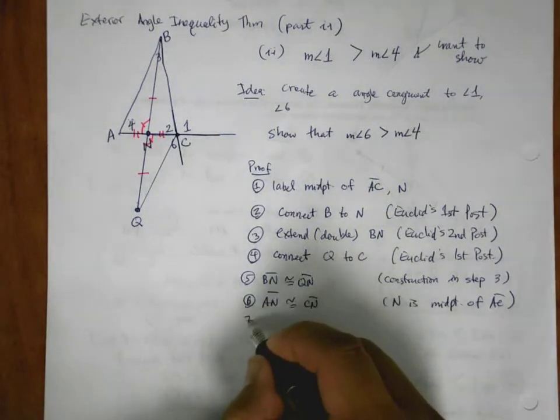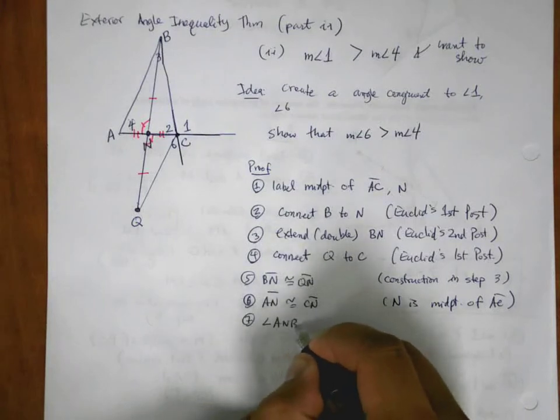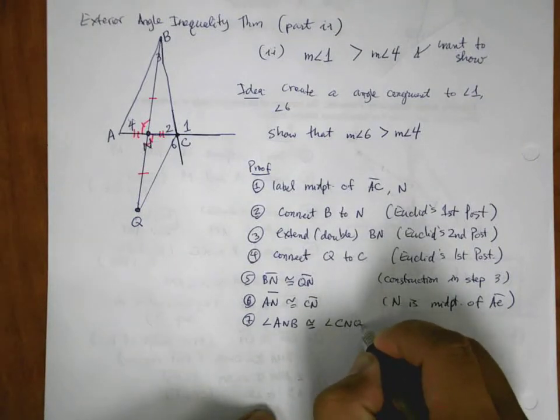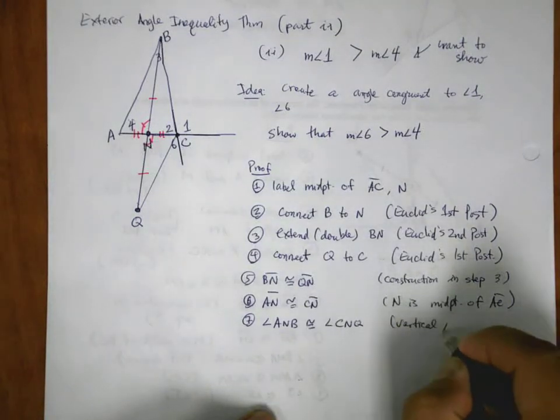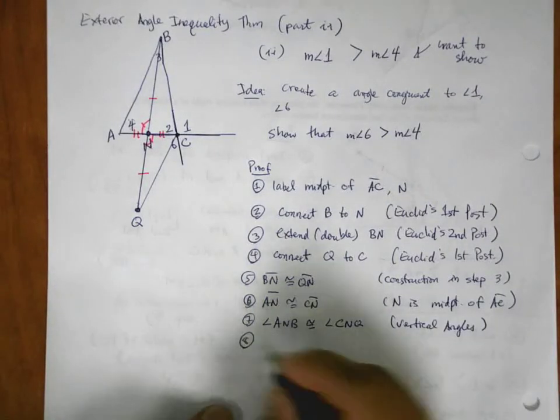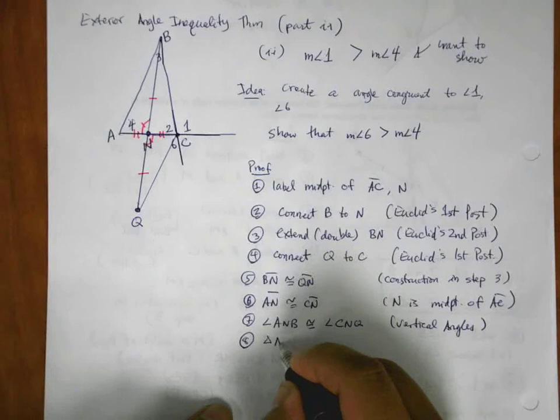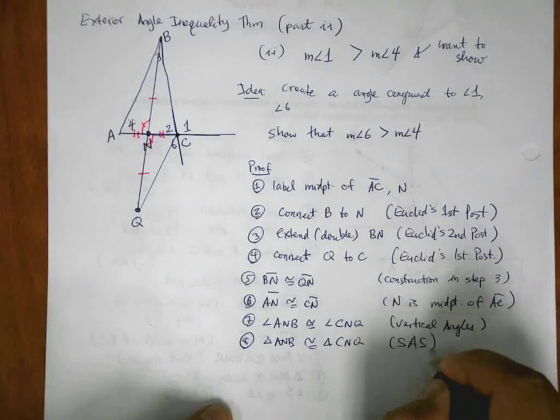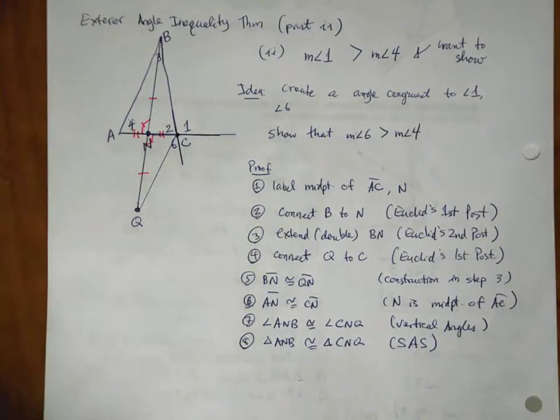So angle ANB is congruent to angle CNQ because they're vertical. And then triangle ANB is congruent to triangle CNQ by side angle side. And the angle that we're very interested in this time is angle 6. This is angle 6 right here. That's the whole thing. I want to make sure that's clear. And we're trying to show that 6 is bigger than 4.